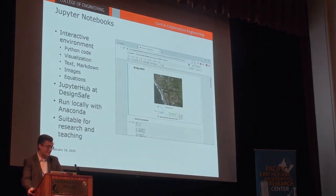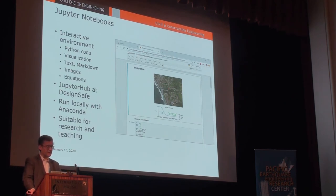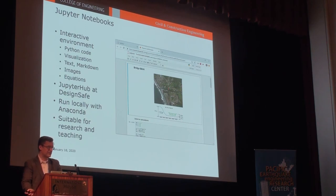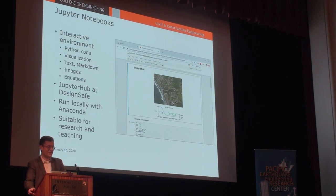Jupyter Notebooks - drilling down a bit more: this is an interactive environment where you can concurrently have your Python code, visualization, text, markdown, images, and equations all within one notebook. It's live code - you can execute the code and throw up a plot right there within the notebook. This is available at JupyterHub on DesignSafe, which you'll hear about later in this session. You can also run it locally through Anaconda. It's a great tool for both research and teaching - here you can see markdown formatted text alongside code defining variables, all bundled in one notebook.